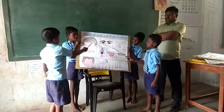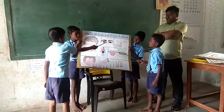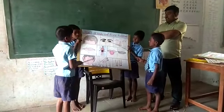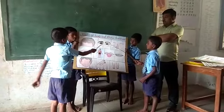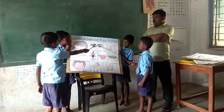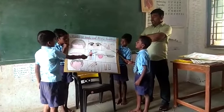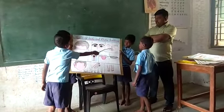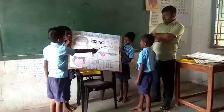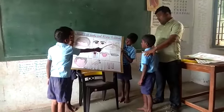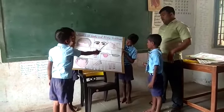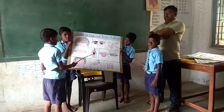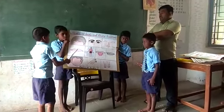What is this? What are these? These are eyes. What do you do with your eyes? I see with my eyes. What is this? These nose. What do you do with your mouth? I smell with my nose.